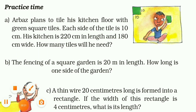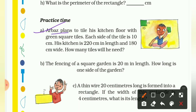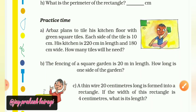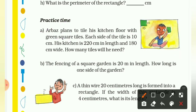Question A: Arbaz plans to tile his kitchen floor with green square tiles. This is Arbaz's kitchen floor, and the green tile has dimensions 10 by 10. So the area of one tile is 100 square centimetres.